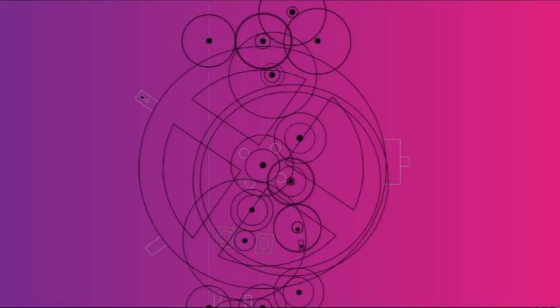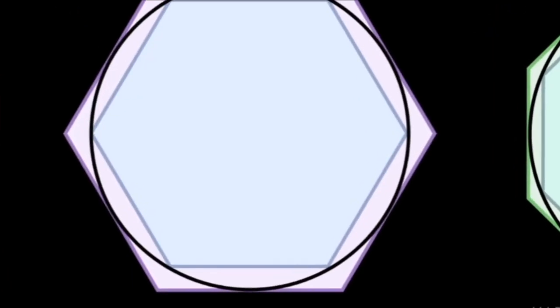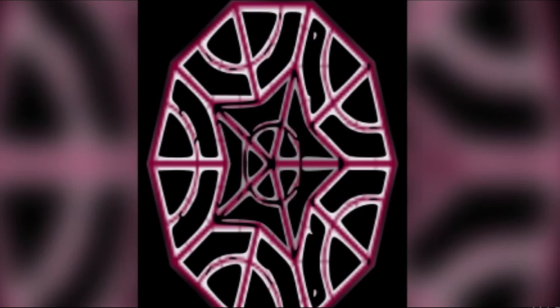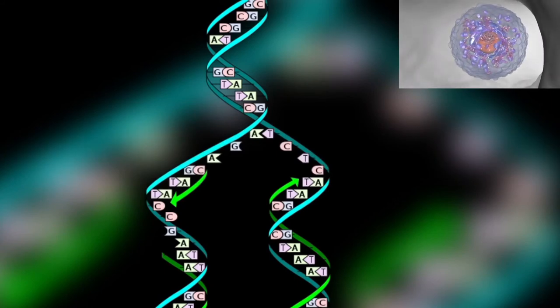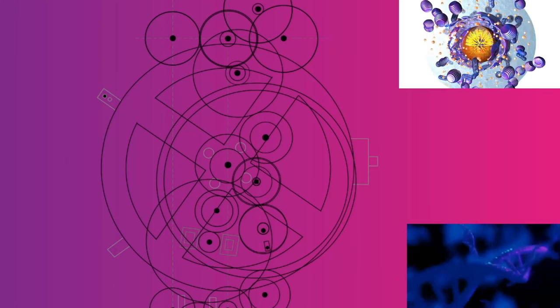Telophase 1 ends when chromosomes arrive at the poles. Each daughter cell now has half the number of chromosomes, but each chromosome consists of a pair of chromatids. The spindle disappears, a new nuclear membrane surrounds each haploid set, chromosomes uncoil back into chromatin, and cytokinesis occurs — though it does not fully complete, resulting in cytoplasmic bridges enabling cytoplasm sharing between daughter cells until the end of meiosis 2. Cells may then enter a rest period known as interkinesis; no DNA replication occurs during this stage.